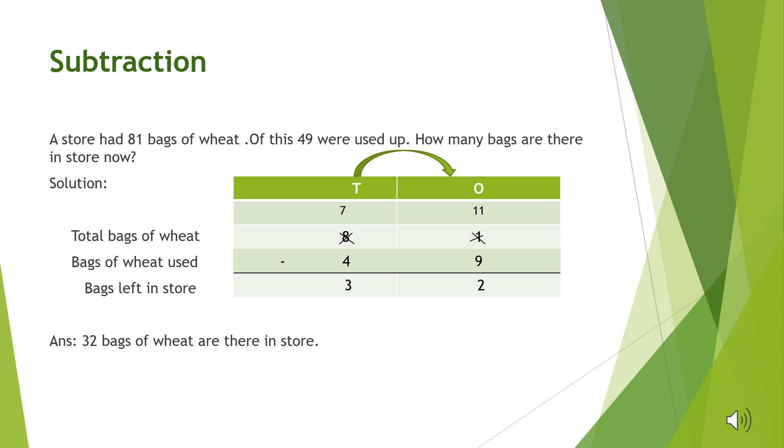Now we will perform subtraction. Starting from the ones column, 1 is less than 9, so we will borrow 1 ten from the tens column. So 1 ten plus 1 one results in 11. Now we will subtract 9 from 11. 11 minus 9 is equal to 2. Write 2 in the ones column.